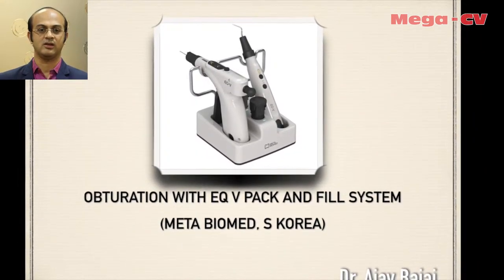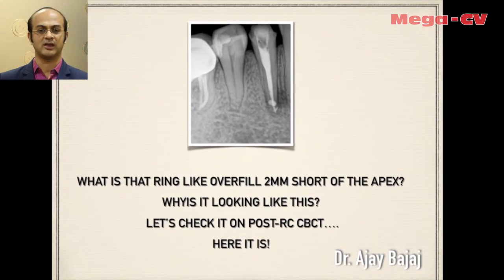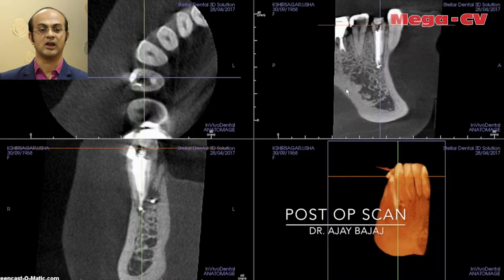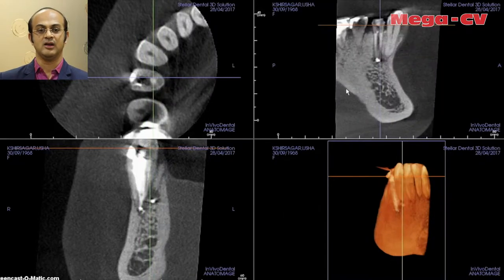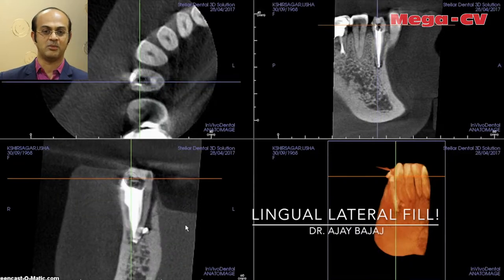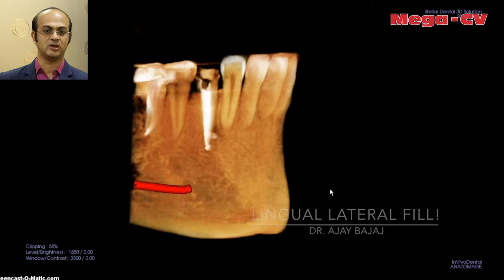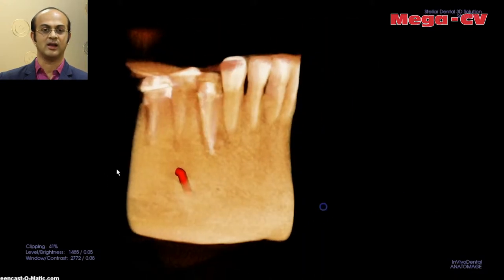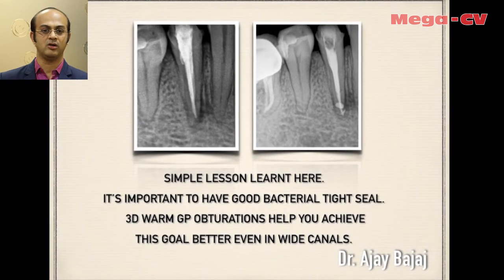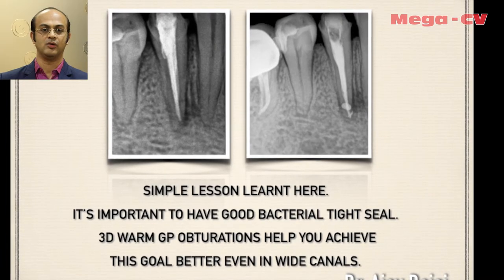The final obturation was done with the EQV pack and fill system, a 3D obturation system by Beta Biomed. On the obturation, a ring-like overfilling was seen 2 mm short of the apex, and I was wondering what that was. A post-operative CBCT scan clearly showed a lateral canal on the lingual side of the tooth — which could not be seen on a conventional 2D X-ray. In 3D, the lateral canal fill appeared as a dot or ring in two dimensions. The simple lesson learned: it is important to have a good bacterial-tight seal, which we achieved here, and the case healed beautifully.